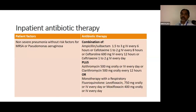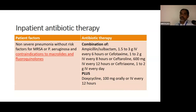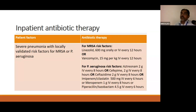For inpatient antibiotic therapy in non-severe pneumonia without risk factors, ampicillin-sulbactam or a third-generation injectable cephalosporin plus a macrolide can be given. Monotherapy with a respiratory fluoroquinolone is recommended for non-severe inpatient cases but should not be used in the Indian context. If there are contraindications to macrolides or fluoroquinolones, doxycycline can be added. For patients with validated risk factors for Pseudomonas or MRSA, linezolid or vancomycin can be added in appropriate doses alongside broad-spectrum coverage.